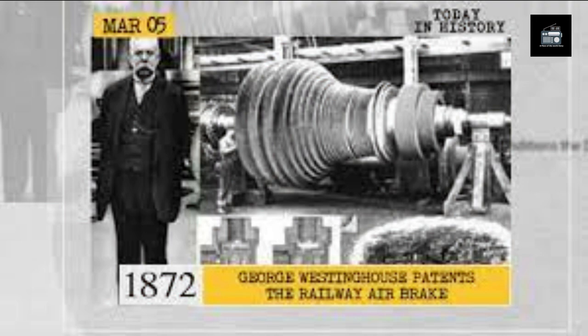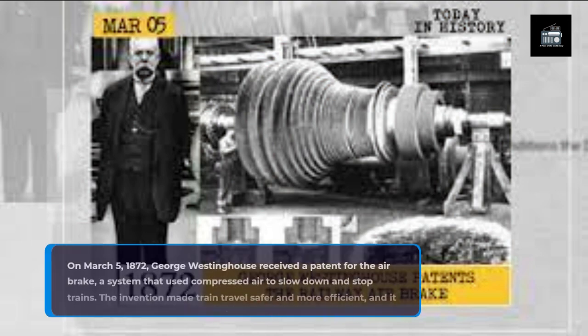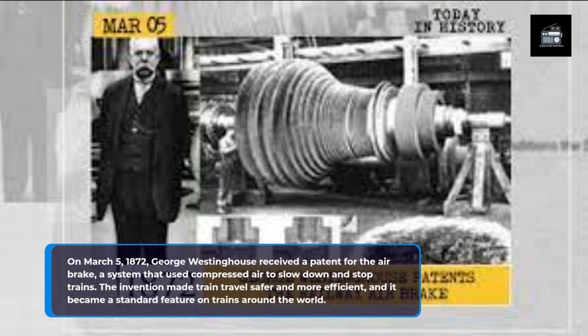On March 5, 1872, George Westinghouse received a patent for the airbrake, a system that used compressed air to slow down and stop trains. The invention made train travel safer and more efficient, and it became a standard feature on trains around the world.